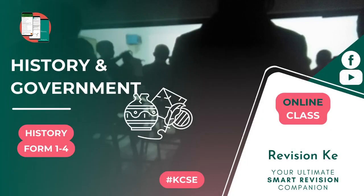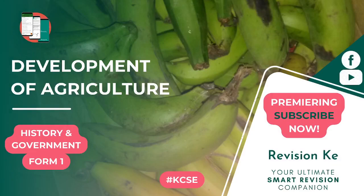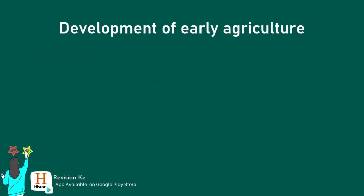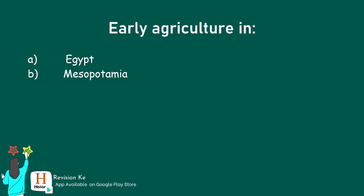Welcome back. The development of agriculture is our next topic under history and government in Form 3. Under this topic, we should be able to look at the following subtopics. We need to be able to identify the factors that led to the development of early agriculture, and explain the development of agriculture in Egypt and Mesopotamia. This will be the focus of this topic — early agriculture in Egypt and Mesopotamia.